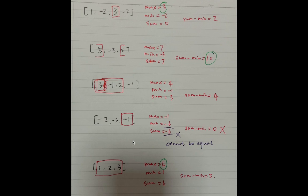If all the elements are negative, we get the minimum subarray sum equal to the sum of the whole array. So sum and minimum subarray sum will be equal. If we do the same thing and compute sum minus minimum subarray sum, we will get 0. But actually we cannot return 0. So when sum equals minimum subarray sum, we know all elements in the array are negative — we should just return the max subarray sum, which is -1.